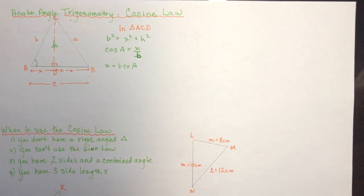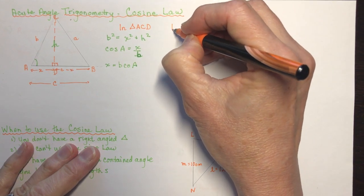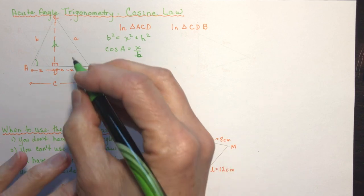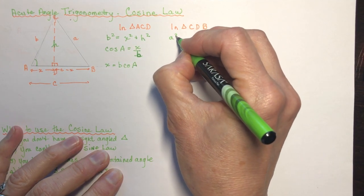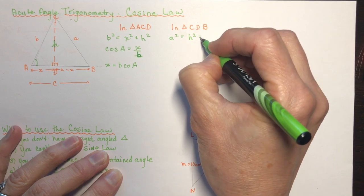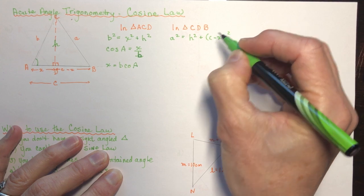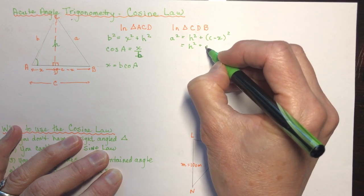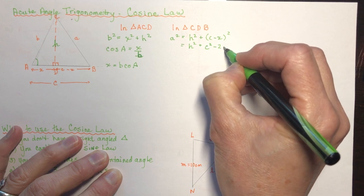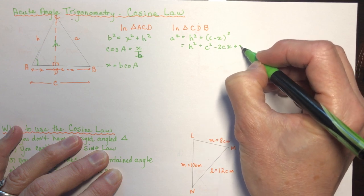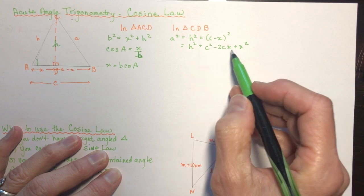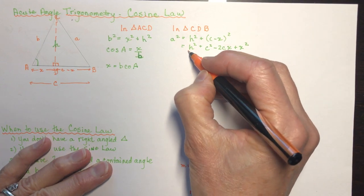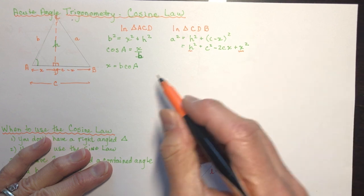Now we go to the second triangle, triangle CDB. Using the Pythagorean Theorem: a squared equals h squared plus (c minus x) squared. Expanding the binomial: that's h squared plus c squared minus 2cx plus x squared. Looking back, we can see that h squared plus x squared equals b squared, so we substitute that in.